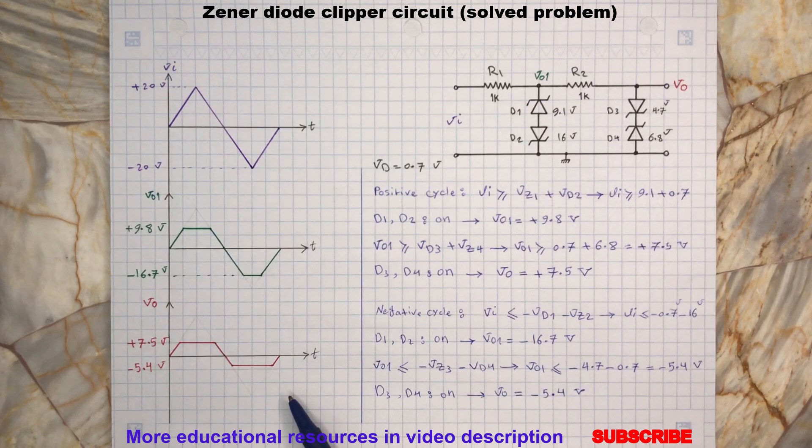Here are the vo1 and vo waveforms during the positive and negative cycles. I hope you enjoyed watching this video.